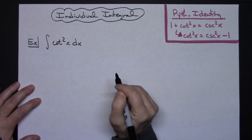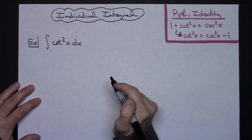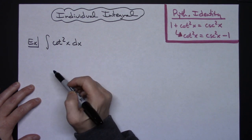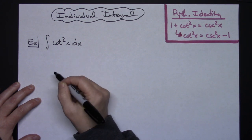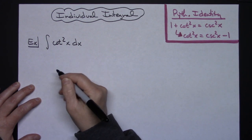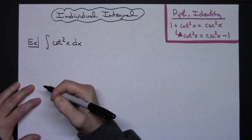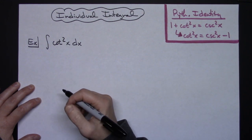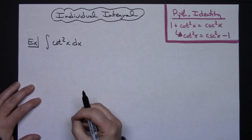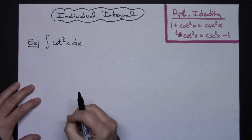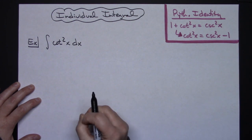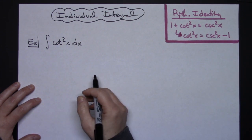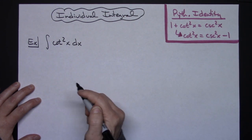In this video I'm going to work out an individual integral. We're going to look at the integral of cotangent squared x dx. Now for someone that's in a Calc 2 or Calc 3 class this is going to be an extremely easy integral to do. However, I'm doing it for that Calc 1 student that is just at the beginning of calculus and hasn't quite got a hang on these integrals yet.